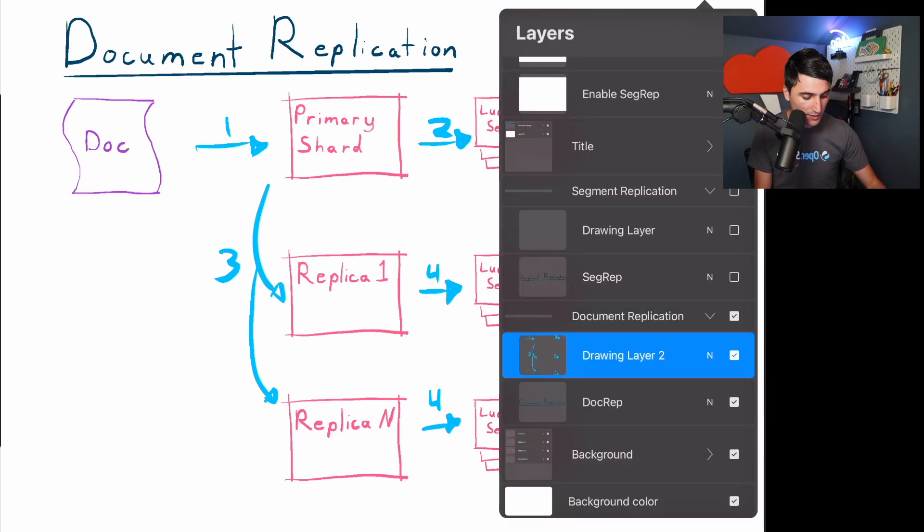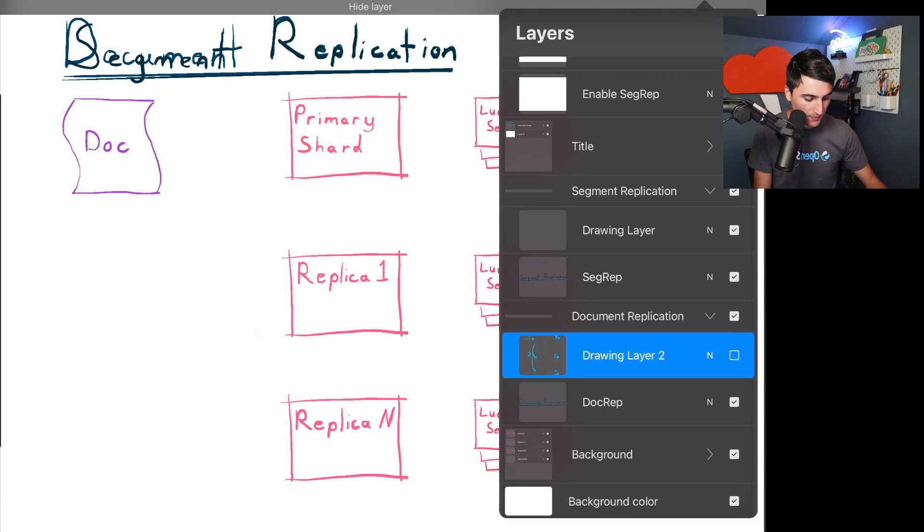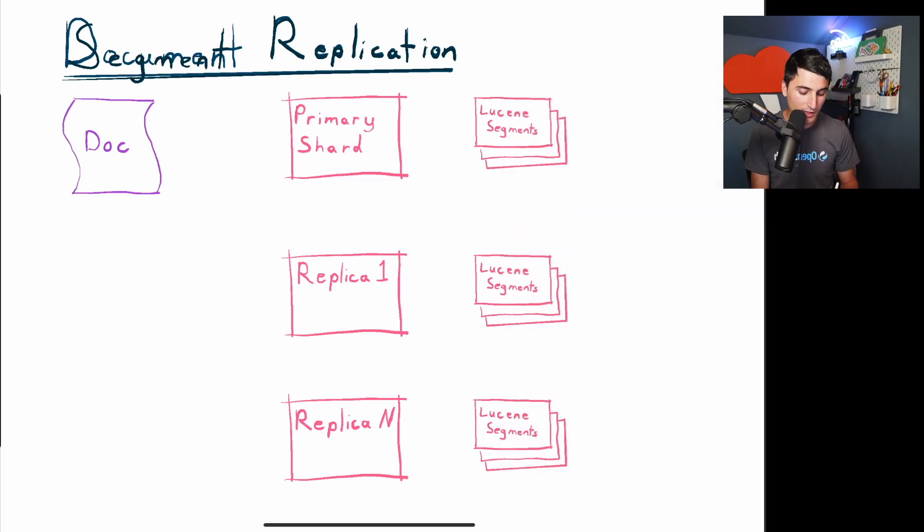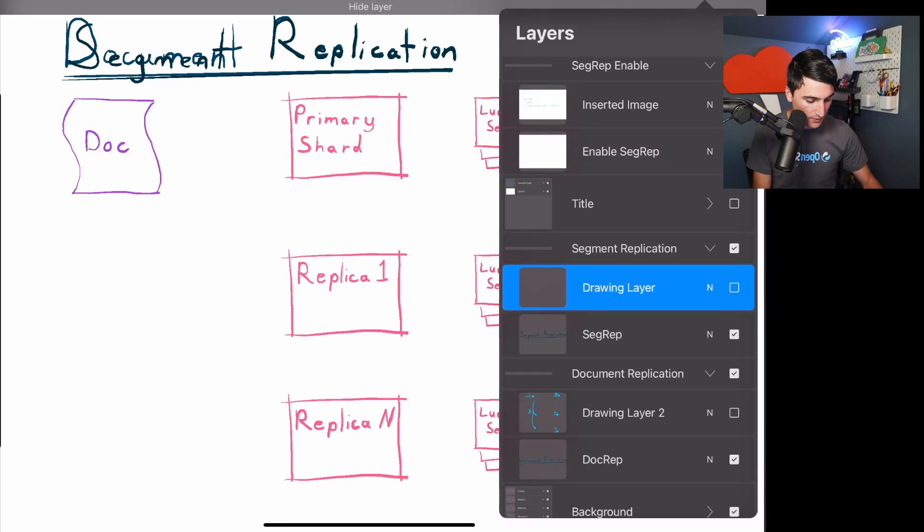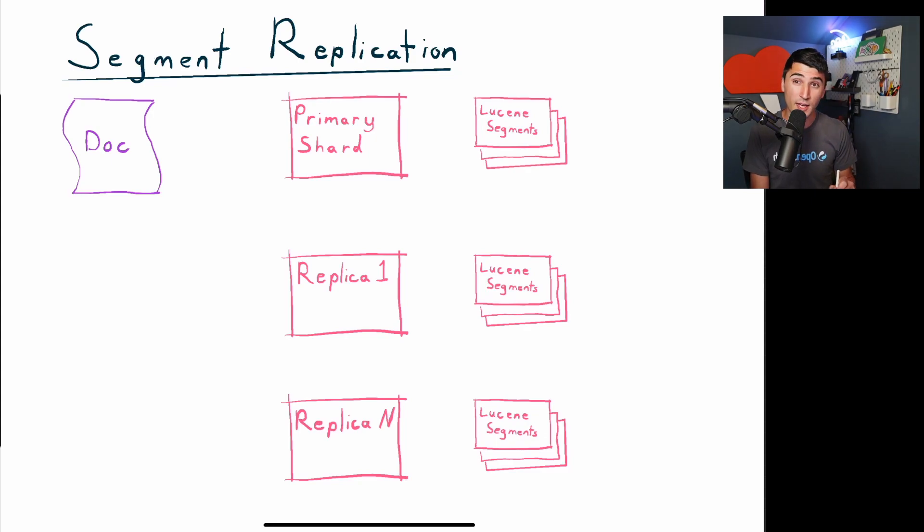As a result, we created segment replication. We'll talk about how this is a little bit different. So segment replication works in a very similar manner. Our document comes into the primary shard. That primary shard still ingests it back to Lucene segments. And here's where we do something pretty clever.